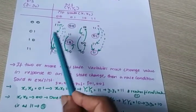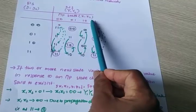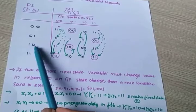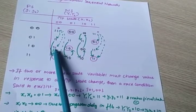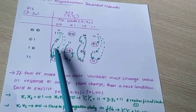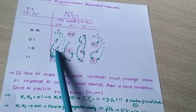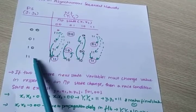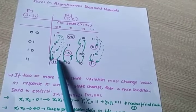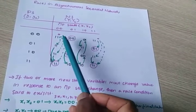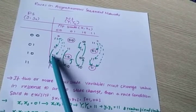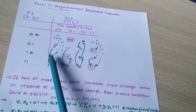So y1, y2 becomes 1, 0, and that becomes the present state. At that time, what is the next state? 1, 1. And this 1, 0 is not a stable state, so the system checks for stability again. Then 1, 1 becomes the present state, and at that time the next state is also 1, 1 — this is the stable state. A dashed line leads from 1, 0 to 1, 1, and a bold line marks the stable state.